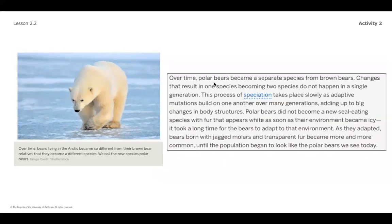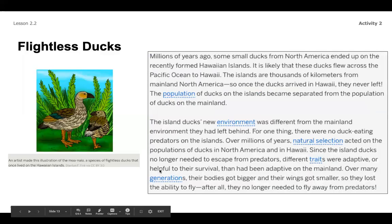Over time, polar bears became a separate species from brown bears. Changes that result in one species becoming two do not happen in a single generation — speciation takes place slowly as adaptive mutations build on one another over many generations. Polar bears did not become a new seal-eating species with white-appearing fur as soon as their environment became icy; it took a very long time to adapt. As they adapted, bears born with jagged molars and transparent fur became more and more common until the population began to look like the polar bears we see today.